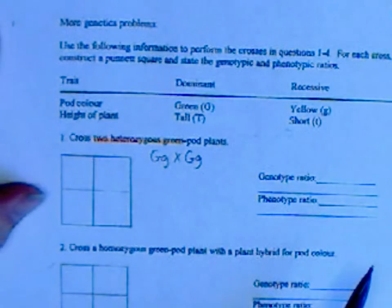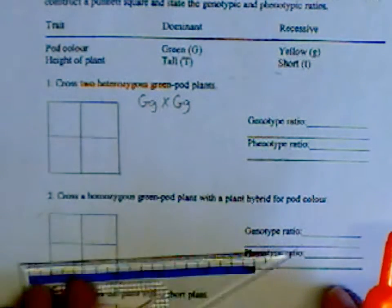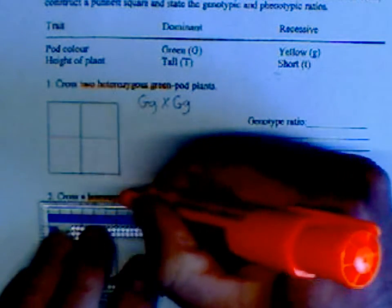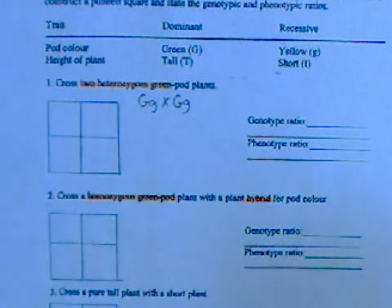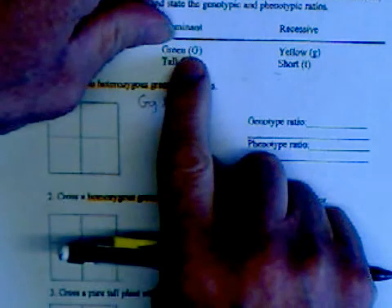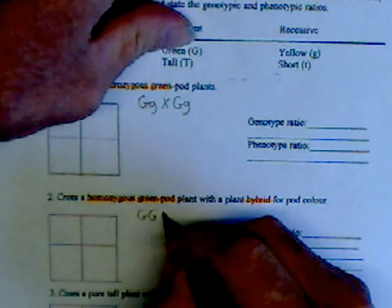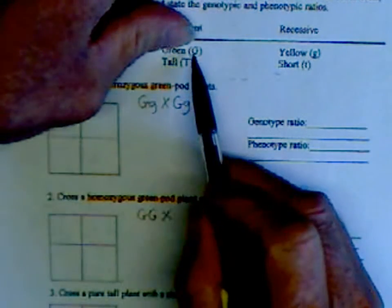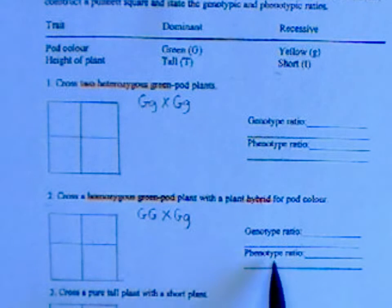The next problem asks for the gametes or sex cells. We have homozygous green crossed with a hybrid. For color, homozygous green means both alleles are uppercase GG. We cross this with a hybrid, which is mixed — uppercase G lowercase g. Set up parent one and parent two, then find the genotype and phenotype.